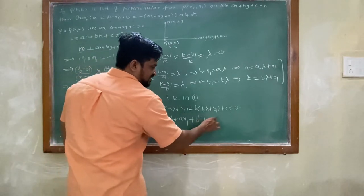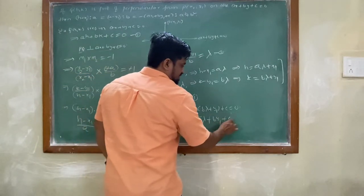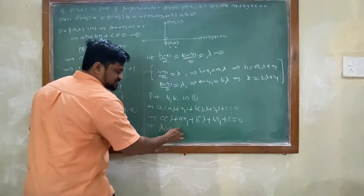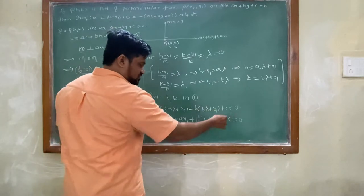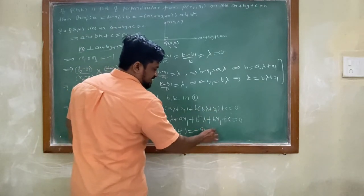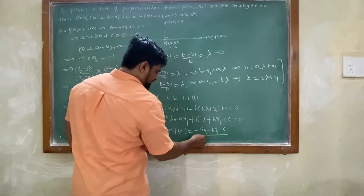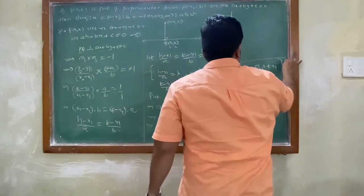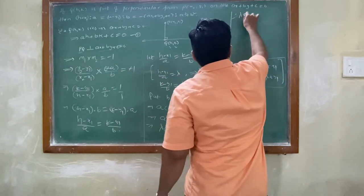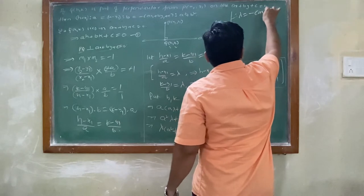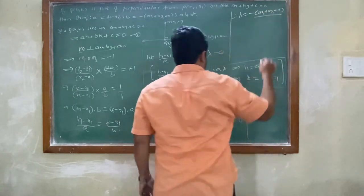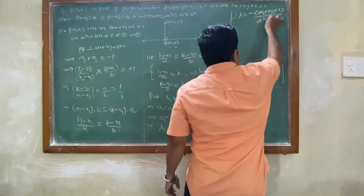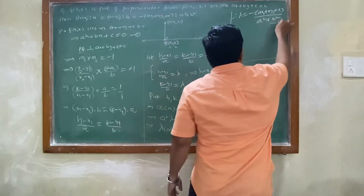Substituting h = aλ+x1 and k = bλ+y1: a(aλ+x1) + b(bλ+y1) + c = 0, giving a²λ + ax1 + b²λ + by1 + c = 0. Taking λ common: λ(a²+b²) = -(ax1+by1+c), so λ = -(ax1+by1+c)/(a²+b²).